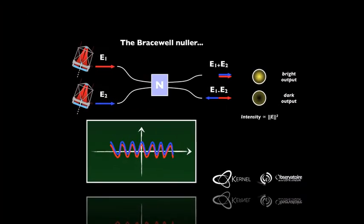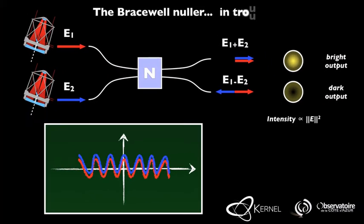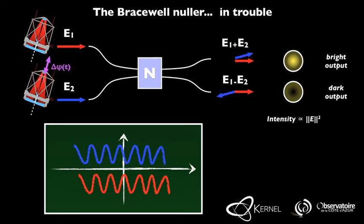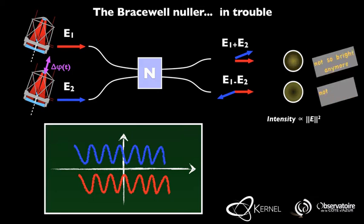The rejection of the light of the on-axis star by the nuller is extremely sensitive to the quality of the tuning of the interferometer. Atmospheric perturbations for ground-based telescopes, vibrations or disturbances in the attitude of the space telescopes will introduce spurious phase offsets between the two beams. And some of the on-axis very bright starlight will therefore leak and find itself coupled into the dark outputs, which makes it more difficult to detect the considerably fainter planetary signals.